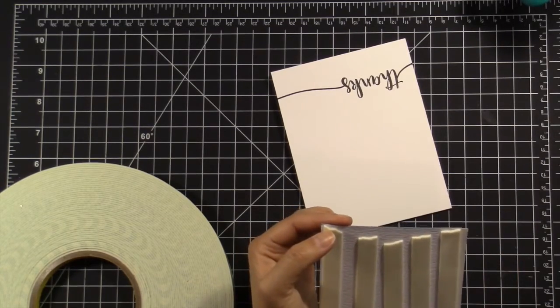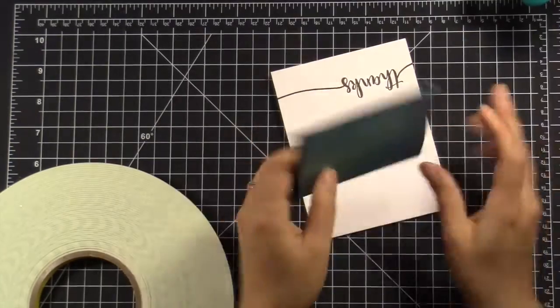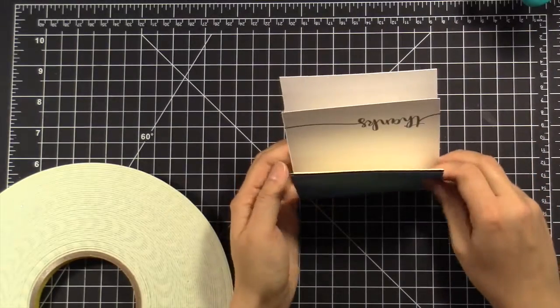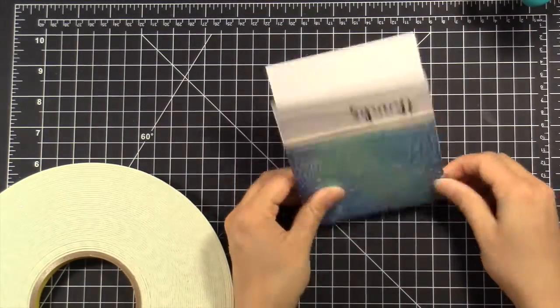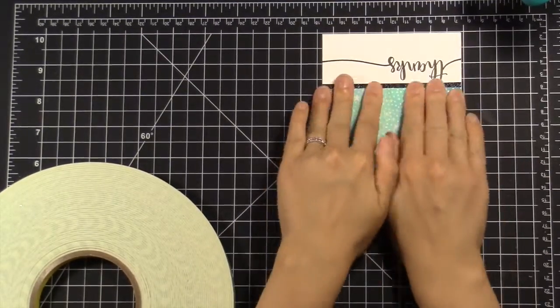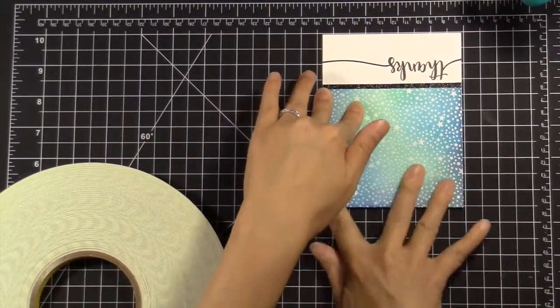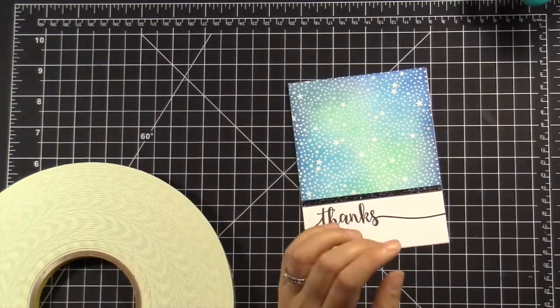So I want to make sure that I don't just put the foam tape on the edges because the center will sink in when I go ahead and mail it. So I'm going crazy with the foam tape and just making sure that that panel stays raised up evenly across the card.